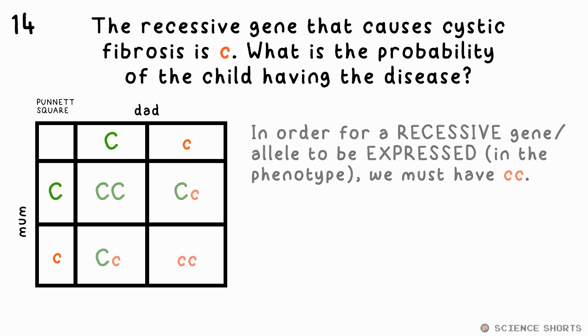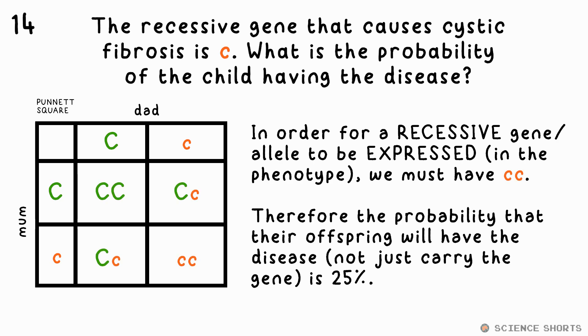In order to have the disease, the child has to have two little c alleles — two recessive alleles. He or she will not only carry the gene but will have the disease. So that's a 25% probability.